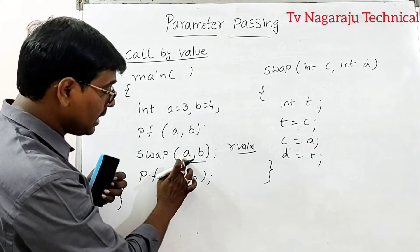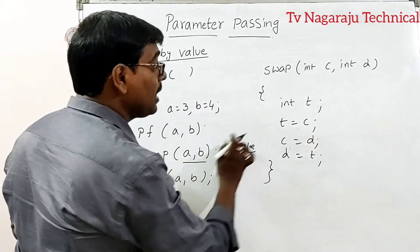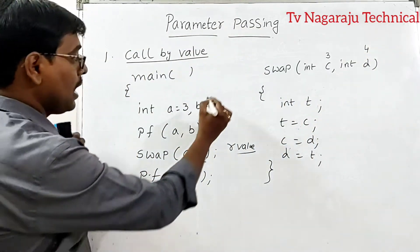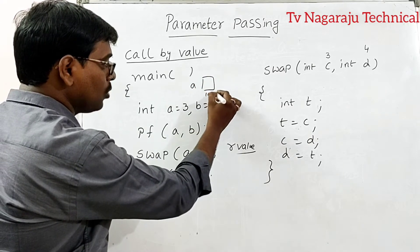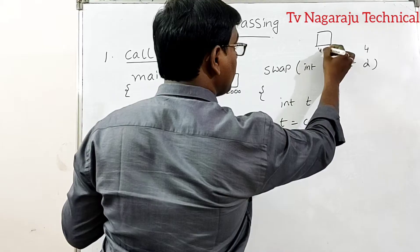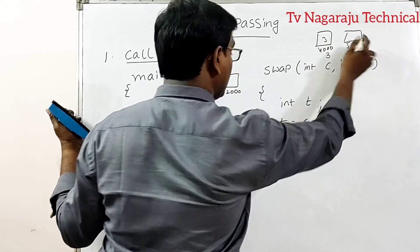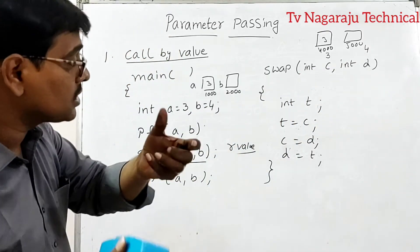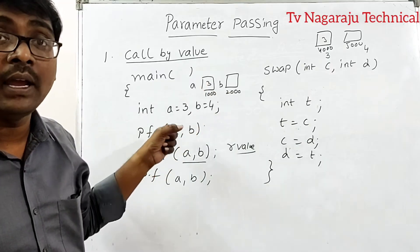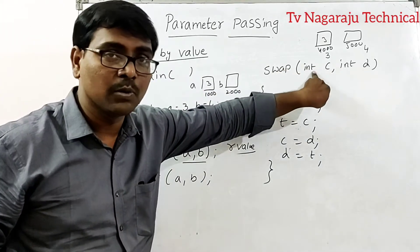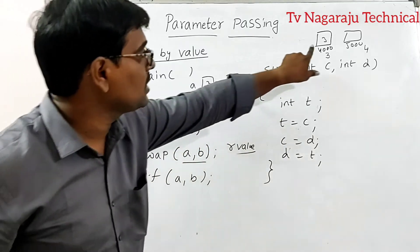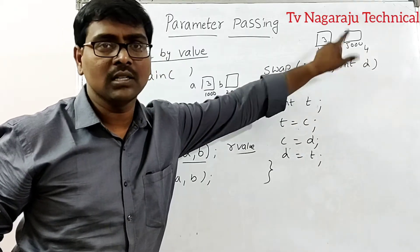In call by value, we are passing the R-value — just the value. The value of a is 3, b is 4, so 3 and 4 are passed. C holds the value 3, d holds the value 4. Now the address of a is say 1000, address of b is say 2000, while c and d have their own addresses, say 4000 and 5000 — two different memory locations. If you perform any modification inside the procedure, it does not affect the originals, because the addresses are different.